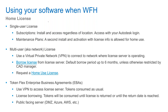Let's talk about home use license. If you are a single user license on subscription, the easiest way is to go to manage.autodesk.com, log in, and it activates with you just logging in and connecting with your ID. For maintenance plans, a second installation and activation with each license of software is allowed for home use, so you can get two of those.